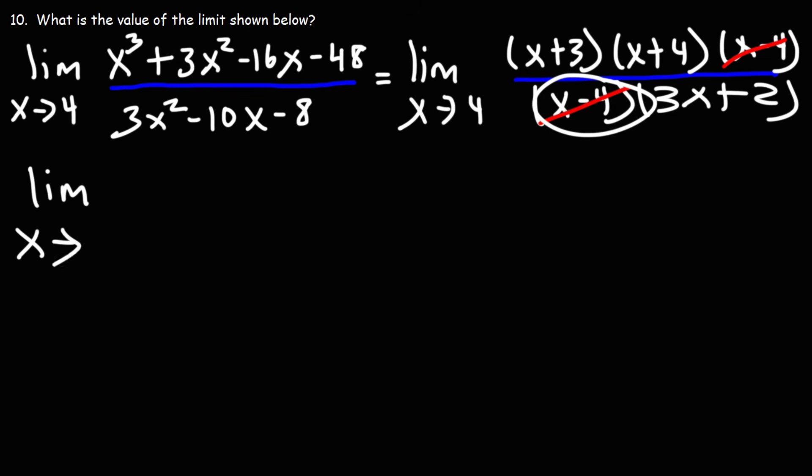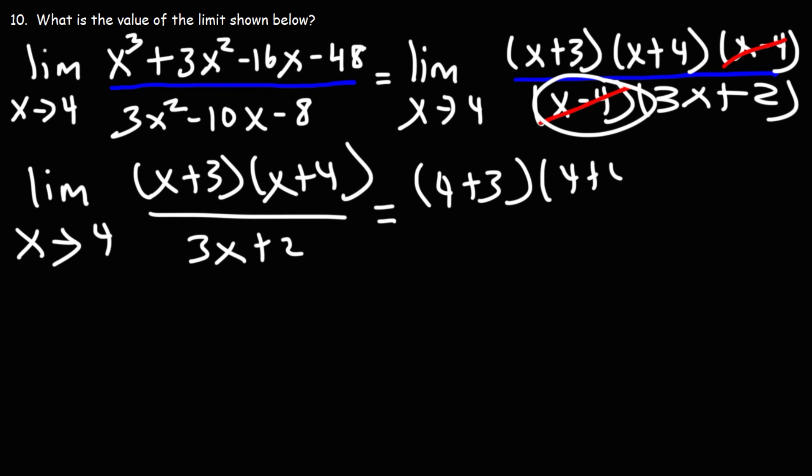So what we have left over is the limit as x approaches 4 of x plus 3 times x plus 4 over 3x plus 2. So using direct substitution, it's going to be 4 plus 3 times 4 plus 4 over 3 times 4 plus 2.